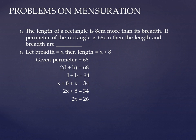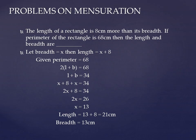Transposing the 2 to the other side, we get x equal to 13. We assumed breadth is x and length is x plus 8. Now we can calculate: length equal to x plus 8 means 13 plus 8, which is 21 centimeters. Breadth is x, which is 13 centimeters. So they gave the relation between length and breadth — length is 8 centimeters more than breadth — and the perimeter. By equating to the formula, we calculated length and breadth.